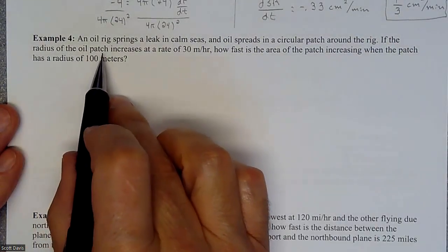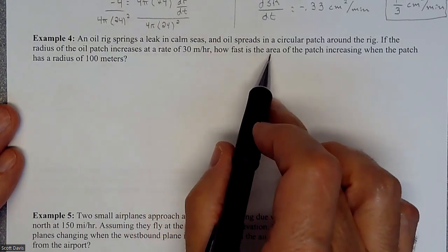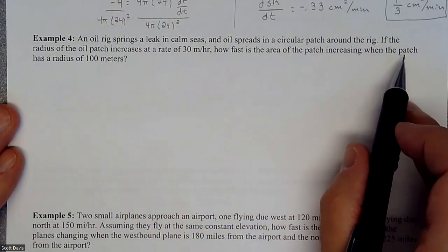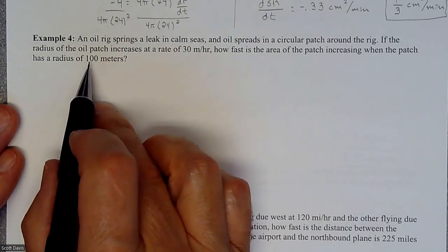If the radius of the oil patch increases at a rate of 30 meters per hour, how fast is the area of the patch increasing when the patch has a radius specifically of 100 meters?